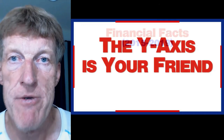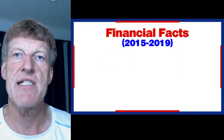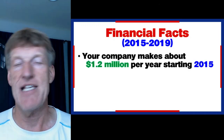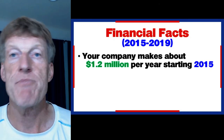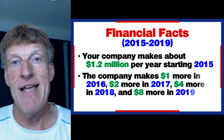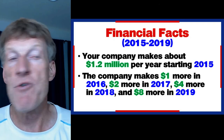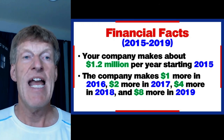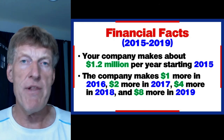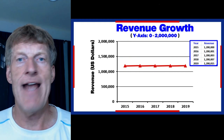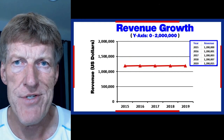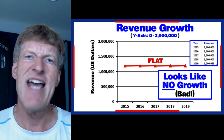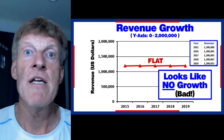I'll give you a perfect example. These are financial facts for my fictional company from 2015 to 2019. My company makes about $1.2 million per year starting in 2015. Now we didn't have a great four years there — the company made a dollar more in 2016, $2 more in 2017, $4 more in 2018, and only $8 more in 2019. If you throw that on a graph, it does not look good. If you're making $1.2 million a year and you're only going up a couple of dollars a year, your earnings are flat. That is no growth. That is bad. That is sucky. What do we do?